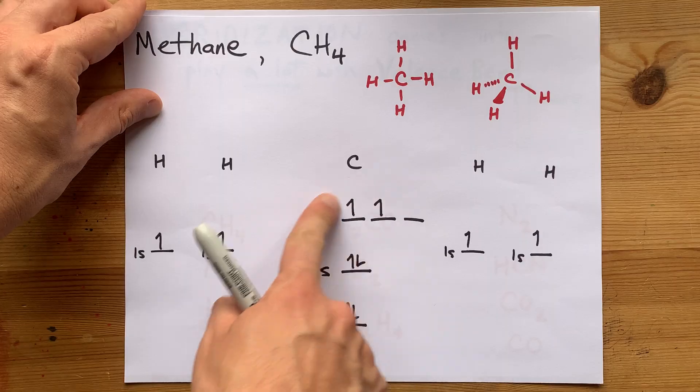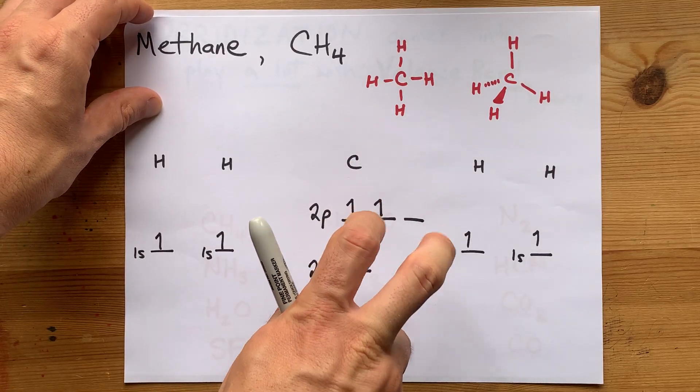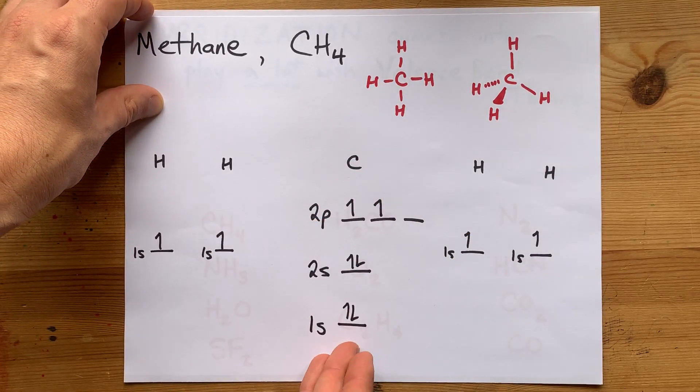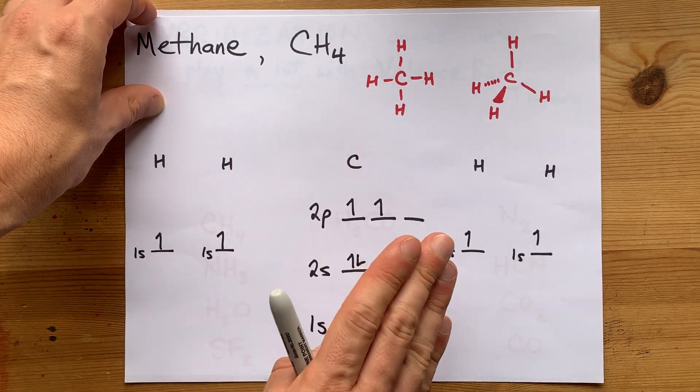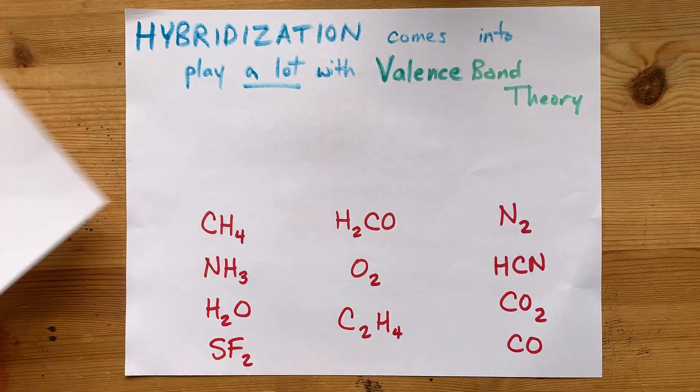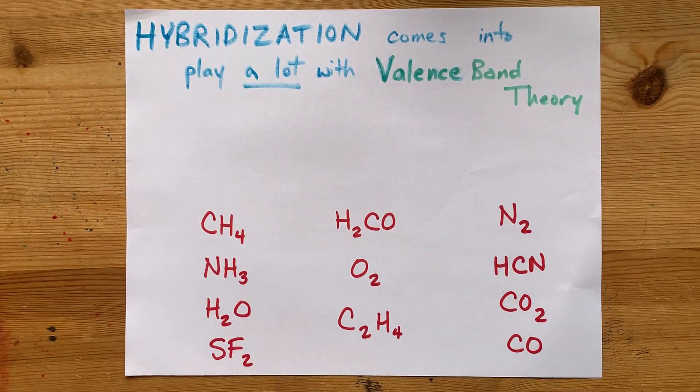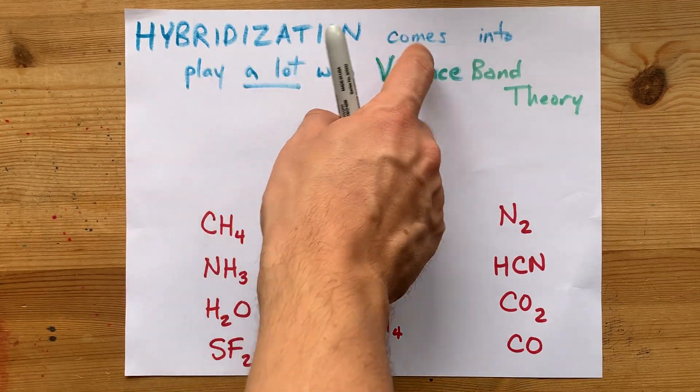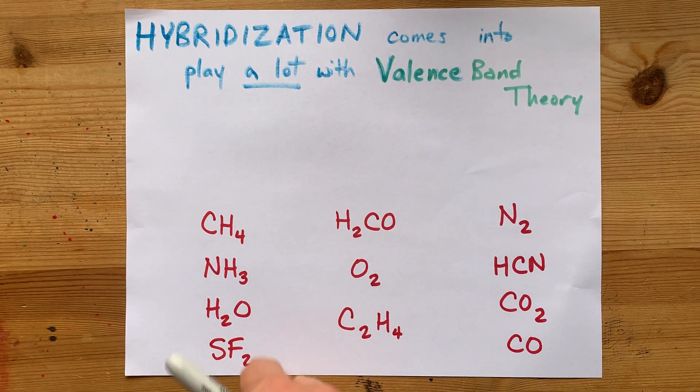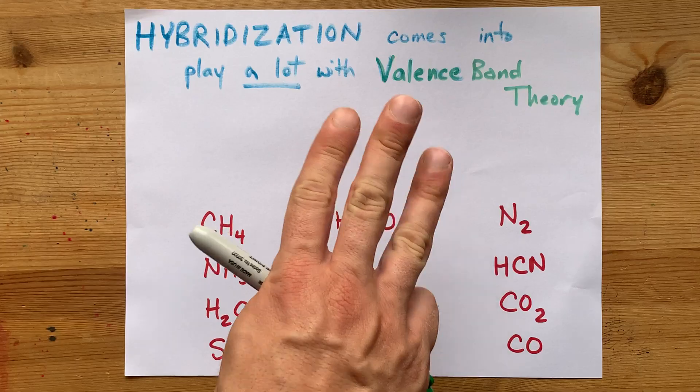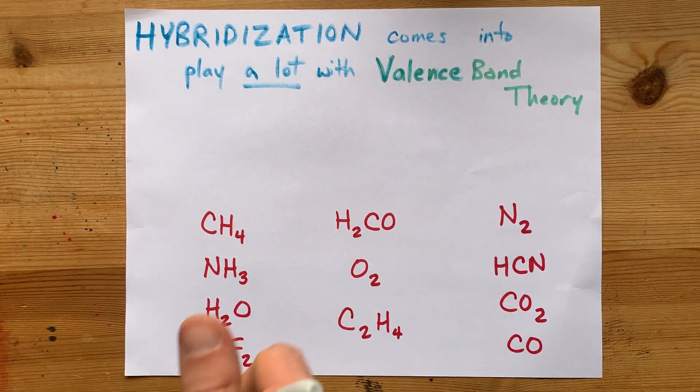Well, you can't based off of carbon's ground state atomic orbitals, 1s2, 2s2, 2p2. And that's why valence bond theory is shored up by hybridization. Hybridization comes into play a lot with valence bond theory.